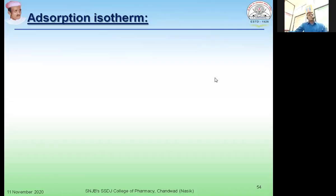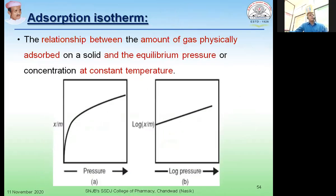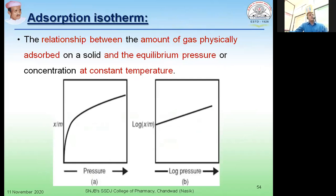Now let us move on and talk about another important concept in adsorption of gases onto the solid particles, and that is adsorption isotherm. Adsorption isotherm is the relationship between the amount of gas being adsorbed physically onto the surface of a solid and the equilibrium pressure at which this process is taking place. We carry out this experiment at constant temperature, and that's why it is known as adsorption isotherm. When you plot a graph between amount of gas physically adsorbed per unit mass of adsorbent against the pressure, we get a curve known as adsorption isotherm.